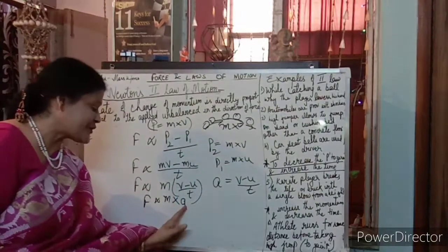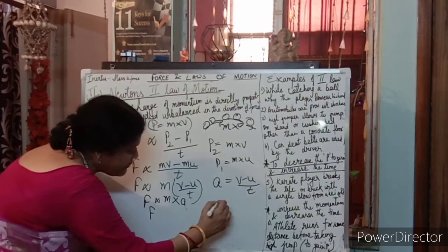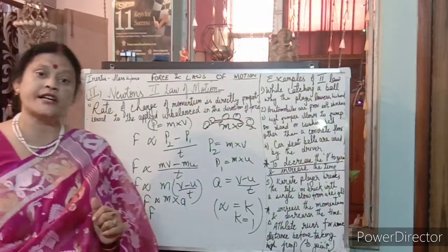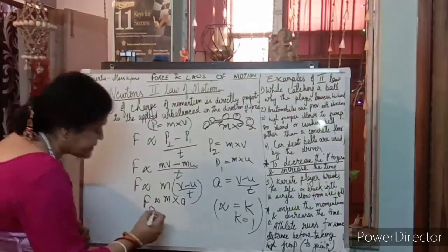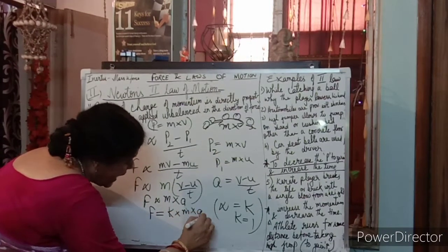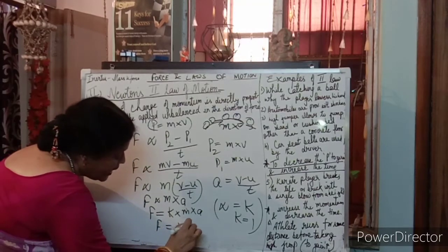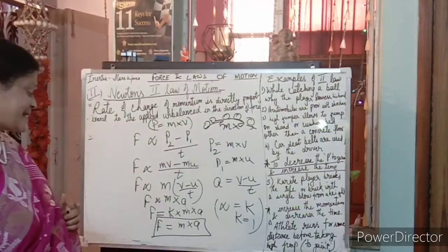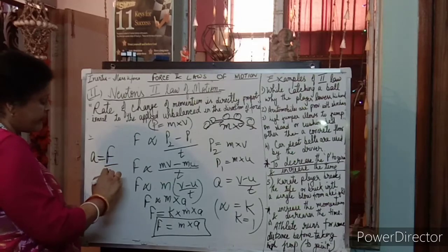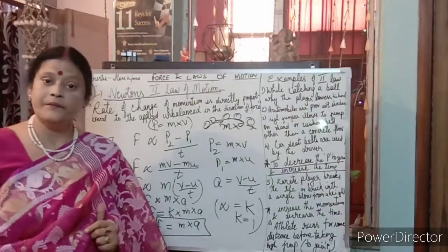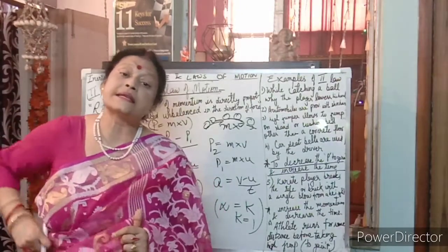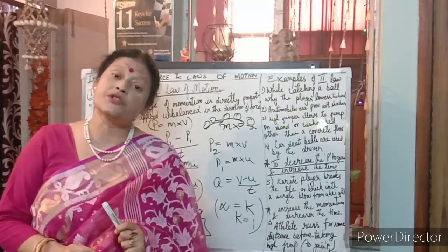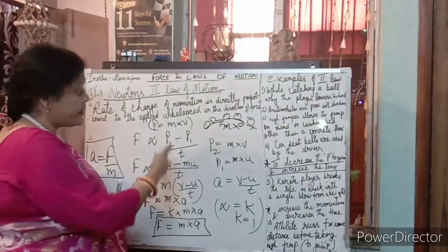Removing the proportionality sign, we introduce a constant k: F = k×m×a. Since k = 1 in SI units, F = m×a. This is the formula for force — mass times acceleration. We can also write a = F/m. This is Newton's second law, which allows us to measure force.